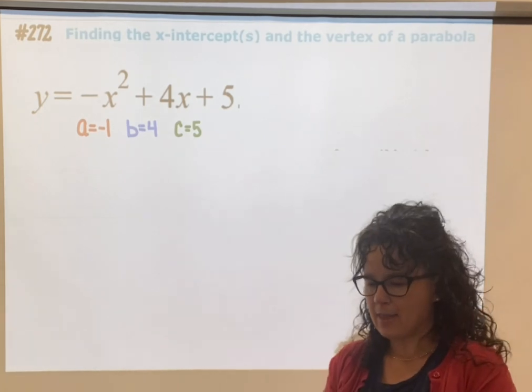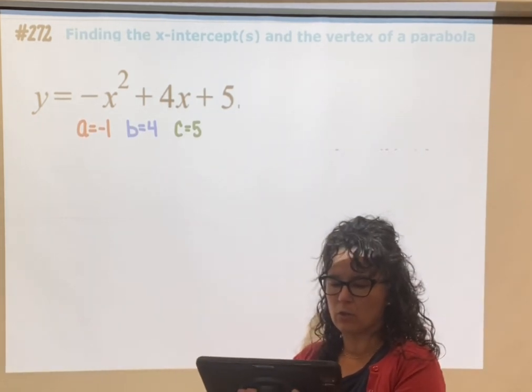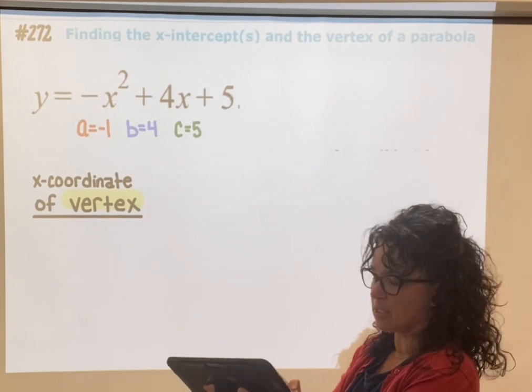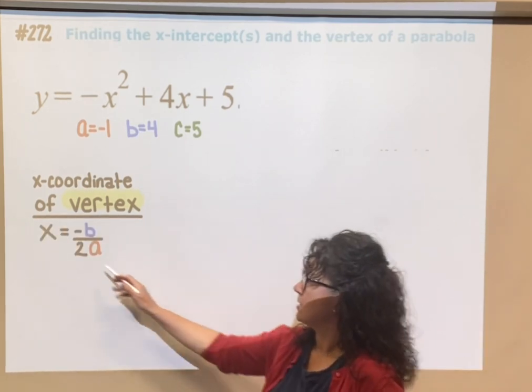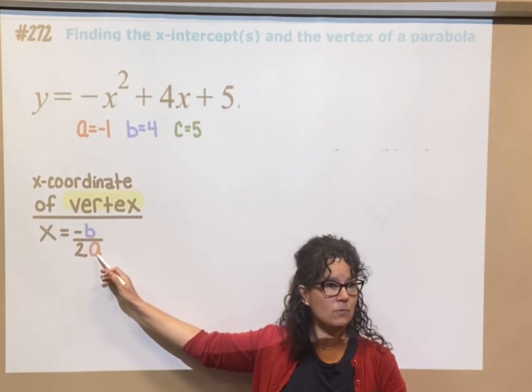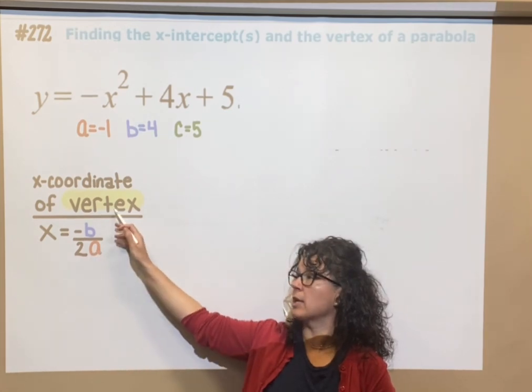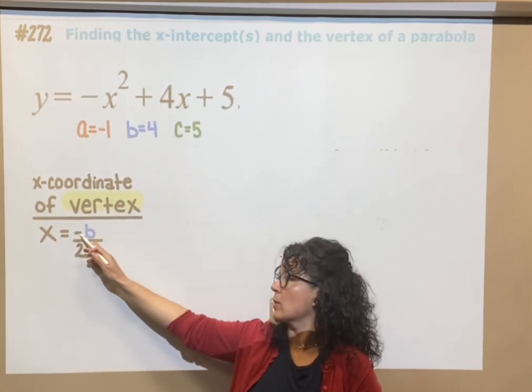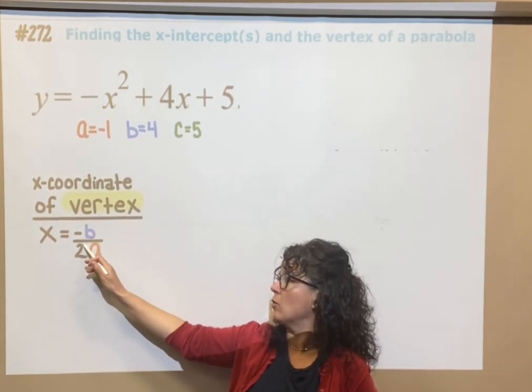Then the next thing we want to do to find the coordinates of the vertex is use this formula to find the x coordinate of the vertex. So we're going to have negative b over 2a.